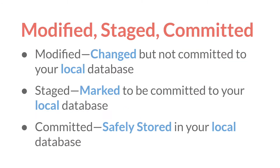Now let's zoom in a little further and talk about files directly. Any individual file in your program can exist in three states. It can be modified, meaning it has been changed or created but not committed to your local database. Staged, meaning it is marked to be committed to your local database but has not yet been committed. And then committed, meaning it is safely stored in your local database—a new snapshot of your program has been created at that point.